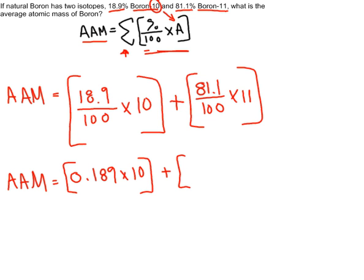And so we get 0.189 times 10, plus 0.811 times 11. Now we do inside the brackets, again, order of operations. And when we get these two numbers, we will add them together.